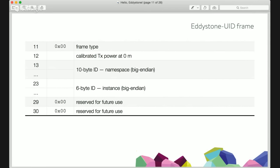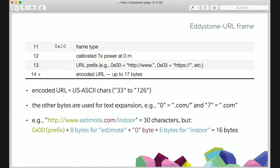Let's move on to the URL frame. It's very similar — we start with the frame type, which is a different value, then we again have the calibrated transmit power to allow those distance estimations. Then the rest of the frame is the URL itself. There are a few interesting things going on here: we only have 18 bytes left after the calibrated TX power — very little space for a URL, essentially 18 characters. If you include HTTP colon slash slash, this already eats up several of those bytes.